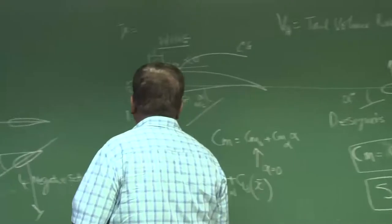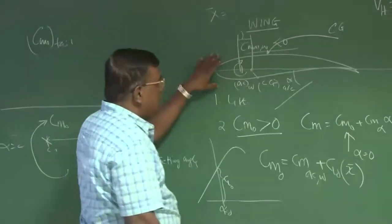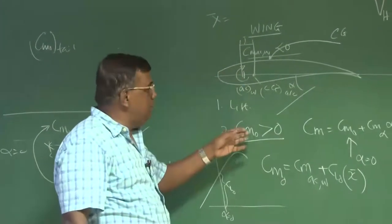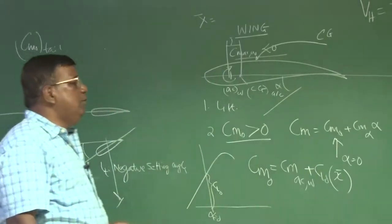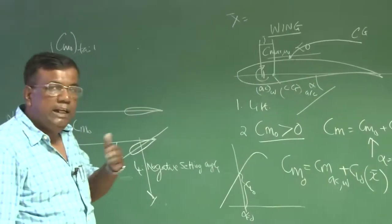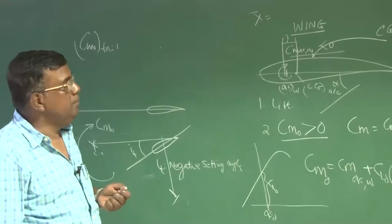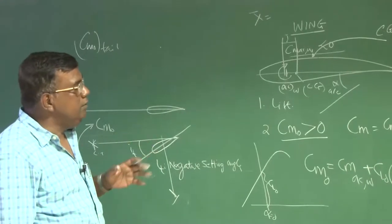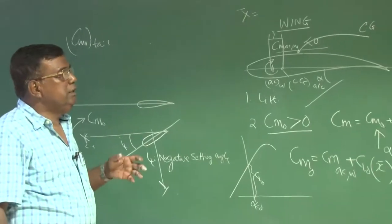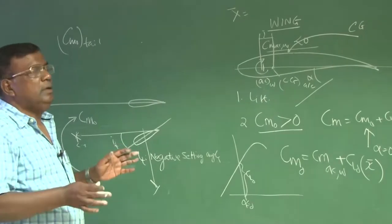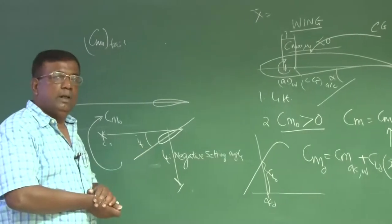So then what is the role of this horizontal tail? To provide major contribution towards dCm by d alpha less than 0, making the aircraft statically stable, and also to contribute towards Cm0, making it positive as desired. What is the role of wing? Produce lift and partially small contribution towards Cm0 of the whole aircraft, tending to nullify Cm AC which is negative. If you understand these things, in the next lecture we will build it up from first principle. Thank you.